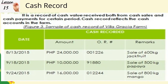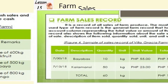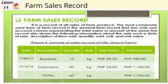Cash record: it is a record of cash value received from cash sales and cash payments for a certain period. A cash record reflects the cash accounts in the farm and shows the date, amount, official receipt number, and remarks, wherein it shows total sales in a certain period of time.